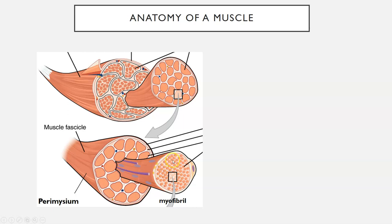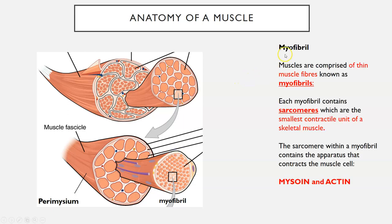Myofibrils are thin muscle fibres. So when asked what a myofibril is, you need to say: a myofibril is a thin muscle fibre. This is where the magic happens — this is where we get a muscular contraction, and it's due to something called the sarcomere that we have within our myofibrils. Muscles are comprised of thin muscle fibres known as myofibrils.